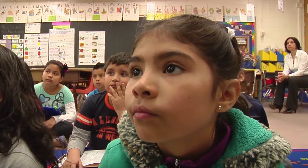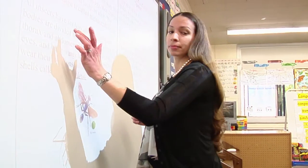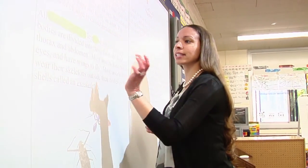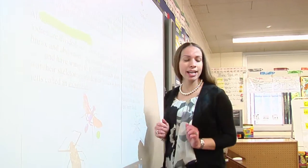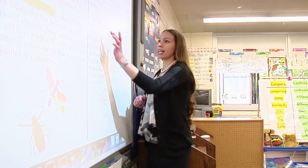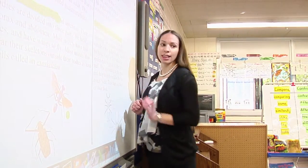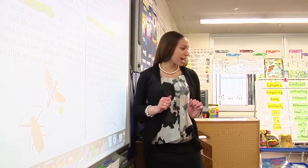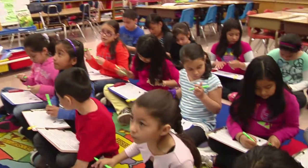So Jacqueline said that insects have how many legs? That insects have six legs. And how many legs do spiders have? Eight legs. Spiders always have eight legs. At this time, take your green highlighter and highlight that difference in your text.